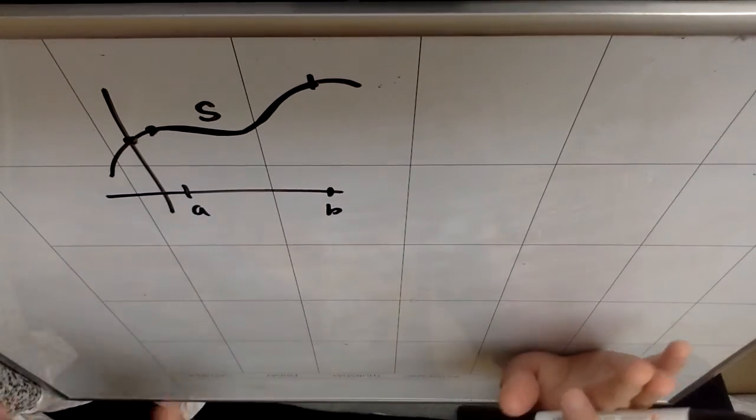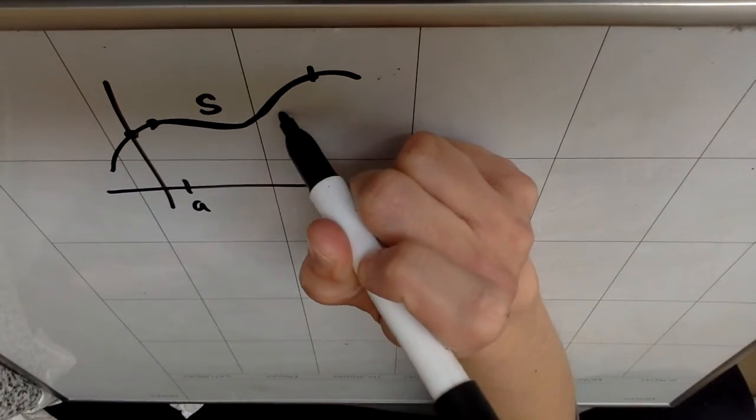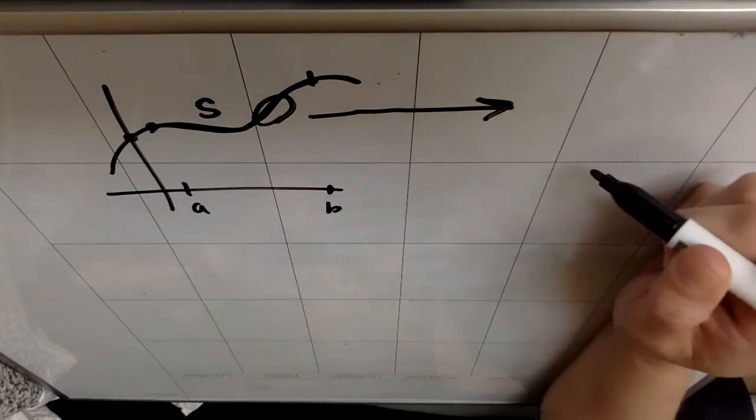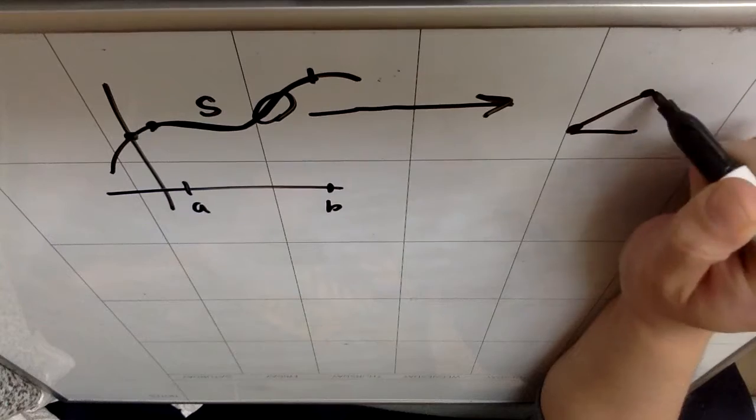What I want us to do is zoom way in on a tiny little piece of section. If we were to look only at a very infinitely small section of this arc,